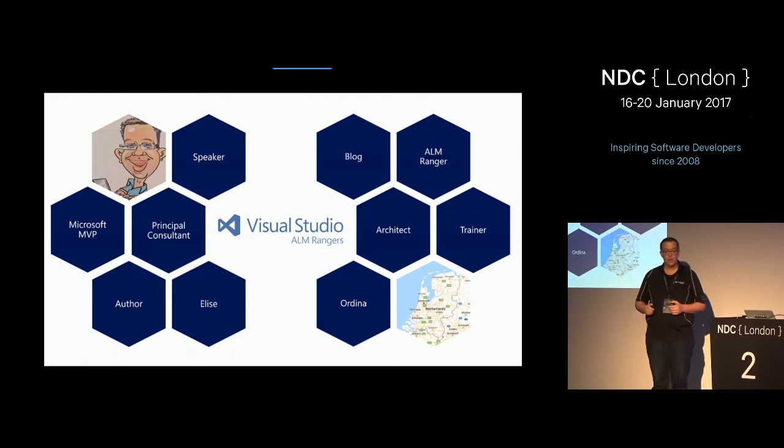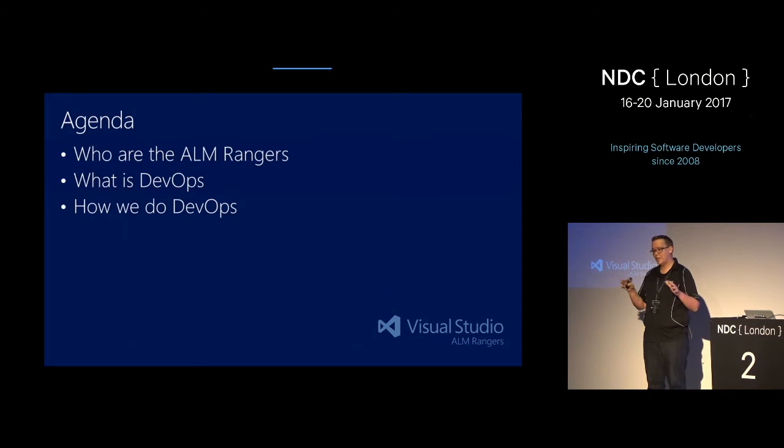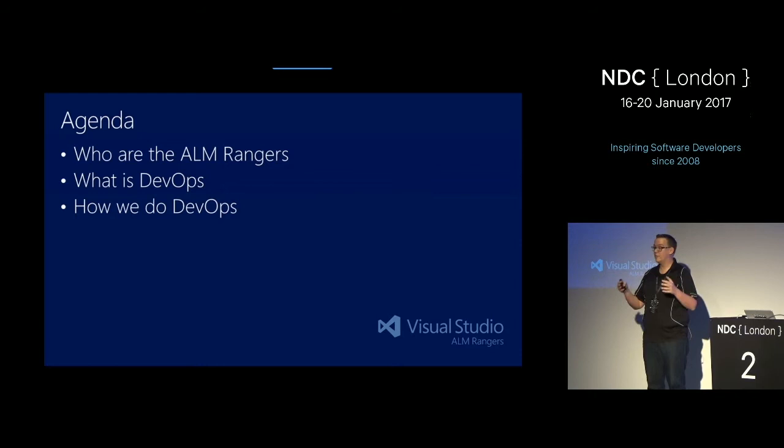First, who are the ALM Rangers? Just a general introduction to make sure that we know what we're talking about. And then, how do we do DevOps? What is DevOps? Just making sure we have a common definition, and then we go deep and look into how do we do DevOps? And hopefully, the examples I will show, maybe you can learn something from it or copy something to your own projects or situation and apply it there.